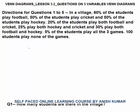Directions for questions 1 to 5. In a village, 60% of the students play football, 50% play cricket, and so on. Every data is given in percentage, and we don't know the total number of students in the village. The last line says 100 students play none of the games, so we don't know exactly how many students there are.